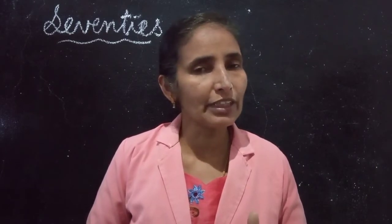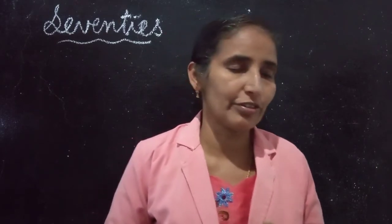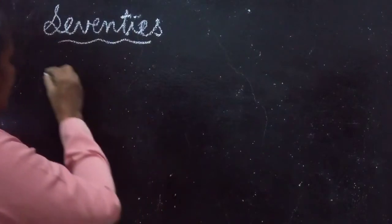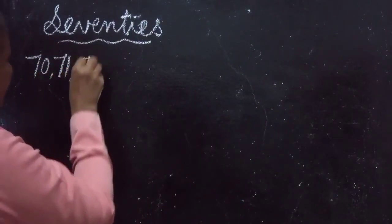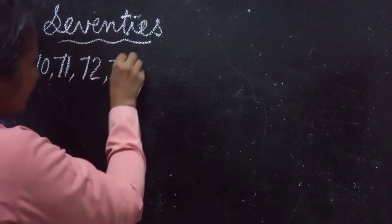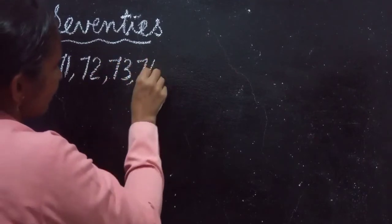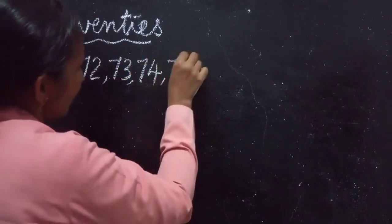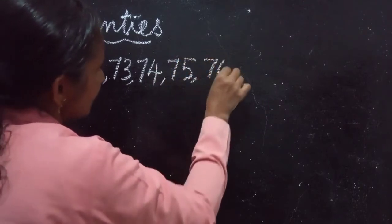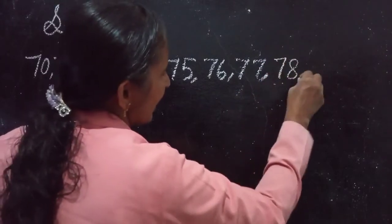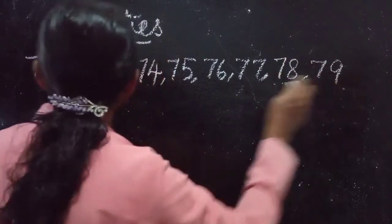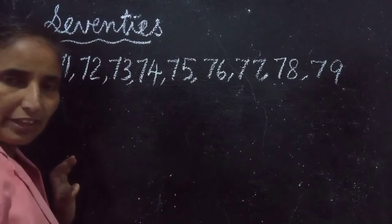Can you say the number of 70s? Very good. Correct. 70, 71, 72, 73, 74, 75, 76, 77, 78 and 79. These are the 70s.